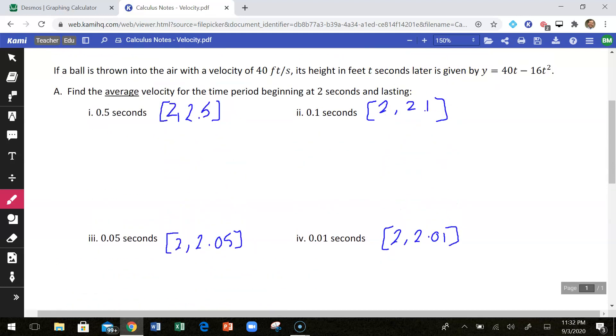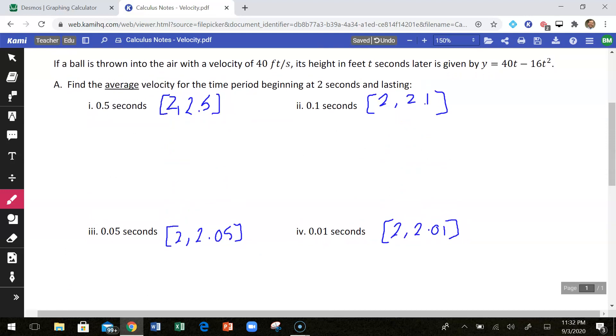So what I want you to realize here is what we are doing is we're taking that one specific time, two seconds, and then we're picking a second point, and we are shrinking that time interval down. So at first we're looking at a time interval of a half a second, but then we're going to look at a tenth of a second. And then we're going to keep on shrinking that time interval down so that we can figure out and we can estimate, based on these answers, what the instantaneous rate of change or the instantaneous velocity is going to be at two seconds. So we're going to try to figure out how fast is the ball traveling at two seconds by shrinking this interval down and looking at these average velocities.